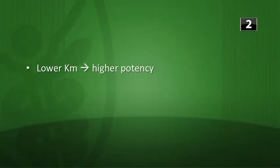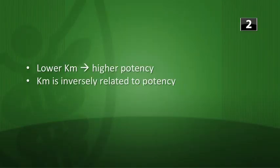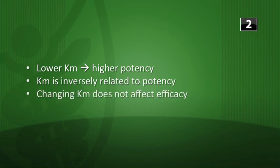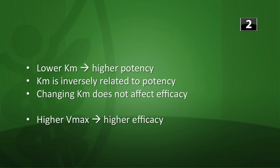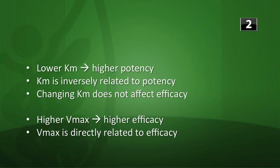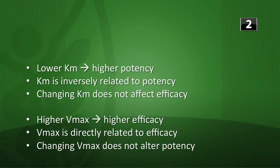Second question: what effect does changing KM and Vmax have on potency and efficacy? Decreasing KM means you need less substance to achieve one-half Vmax, so lower KM means higher potency — KM is inversely related to potency. Changing KM does not affect efficacy. An increase in Vmax means greater reaction velocity, so Vmax is directly related to efficacy. Changing Vmax does not affect potency.